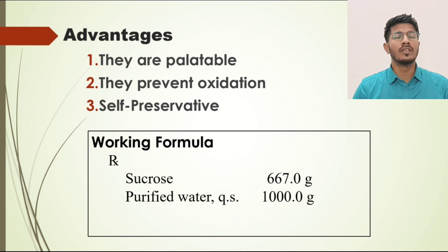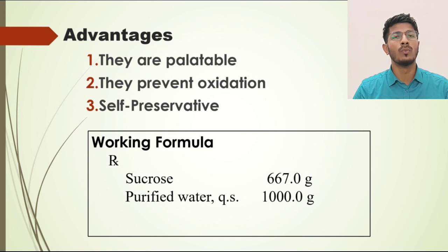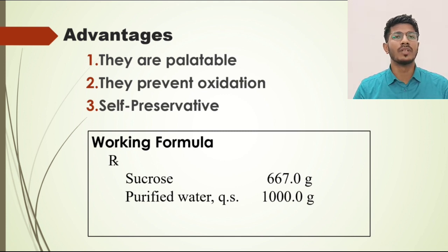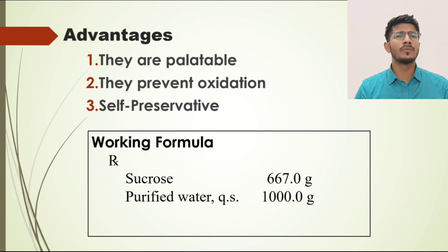As mentioned, the IP preparation requires weight by weight. However, while doing the preparation, we can directly take the same value in ml for water — because the density of water is equivalent to 1 gram per ml at a specific temperature and pressure. So 1 gram will be approximately equal to 1 ml. Therefore, if we need 1000 ml or 50 ml of water, whatever we need, we can directly take it in ml instead of grams. So there is no need for extra calculation.